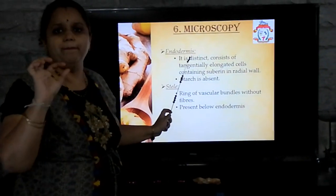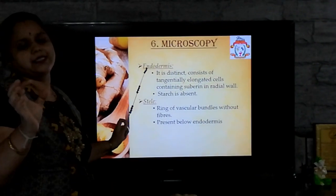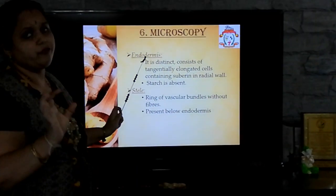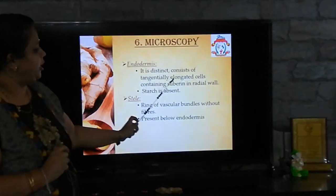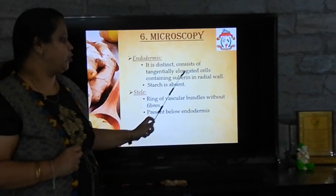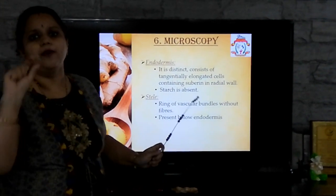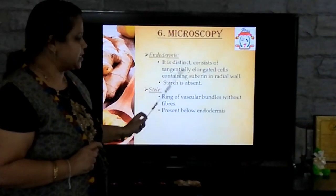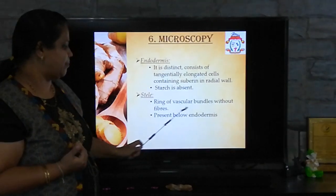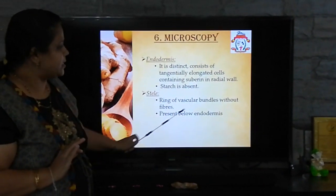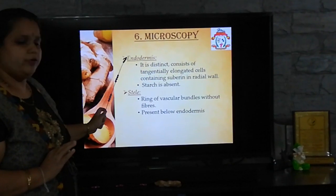Next, endodermis — this is the most important feature. It appears as a distinct single line. If you observe endodermis, you can easily identify that the given sample is ginger. It consists of tangentially elongated cells which contain suberin in the radial wall, so suberin thickenings are present. When drawing the TS of ginger, the endodermis is drawn thicker. Starch is absent in the endodermis. Next, we see the stele in the lower part of the TS, which consists of a ring of vascular bundles. Fibres are not present here, and it is located below the endodermis.